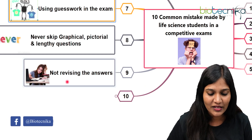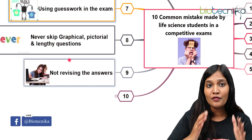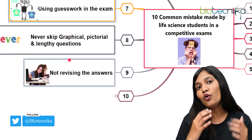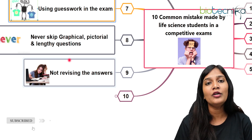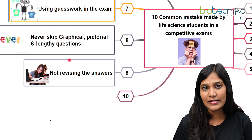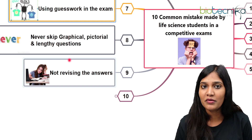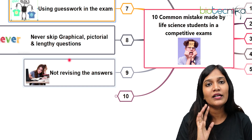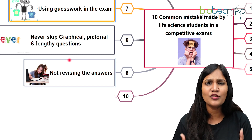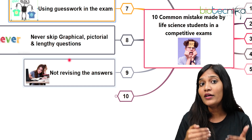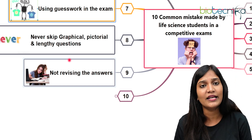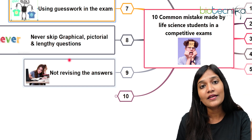The next important mistake is not revising your answers. The last 10 to 15 minutes of the exam are very crucial, just like the first 15 minutes. If there are questions you couldn't answer, for example questions 7 and 9, cross-mark them in the question paper. When you have time, go back and solve them. But if you don't manage that last 10 to 15 minutes, you won't be able to revise whether you answered and marked everything correctly.